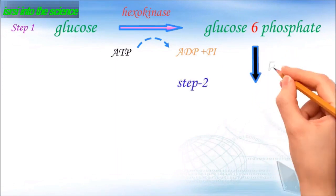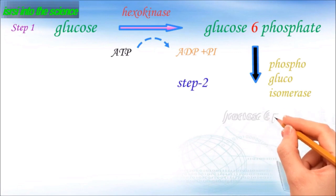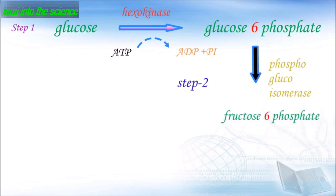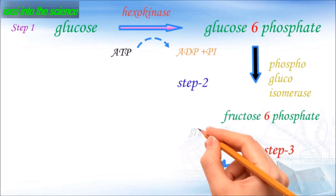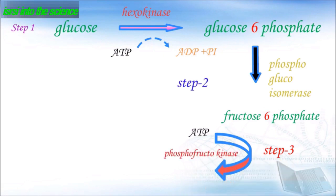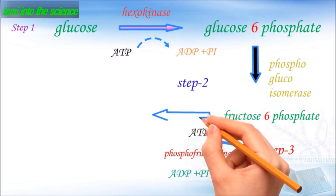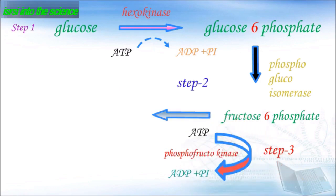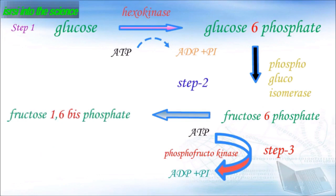In step 2 of glycolysis, the enzyme phosphoglucoisomerase converts glucose-6-phosphate into fructose-6-phosphate. In step 3, fructose-6-phosphate is converted into fructose-1,6-bisphosphate. Again, ATP is converted into ADP and inorganic phosphate, and this inorganic phosphate is given to fructose-6-phosphate to make it fructose-1,6-bisphosphate.